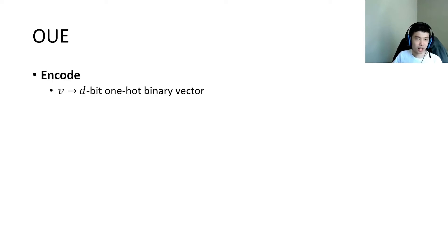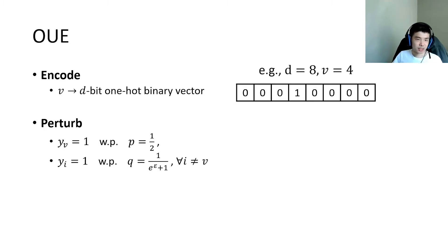OUE encodes an item to a one-hot binary vector with length d, in which only one bit is 1 while all other bits are 0. In the perturb step, OUE considers each bit of the encoded binary vector separately. Specifically, for each bit of the encoded vector, if it is 1, then it remains 1 with probability p.